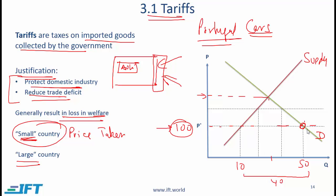The government sees these imports and decides to impose a 50% tariff. If that happens, the price of cars in Portugal becomes 150, because the consumer is paying 100 plus the 50 tariff. At 150, domestic production goes up to 20,000, while demand comes down to 40,000. The amount imported is now 20,000 — so notice that imports go down. But what else is going on?